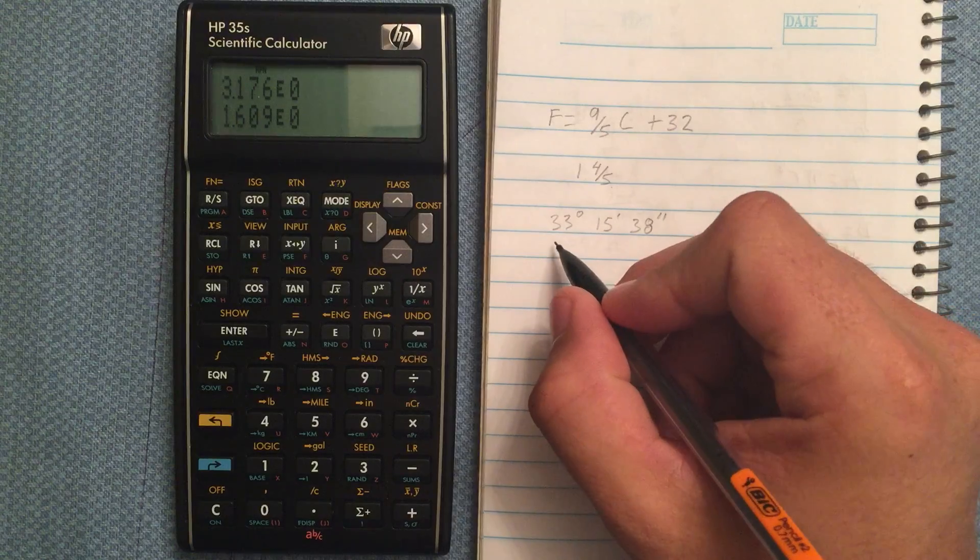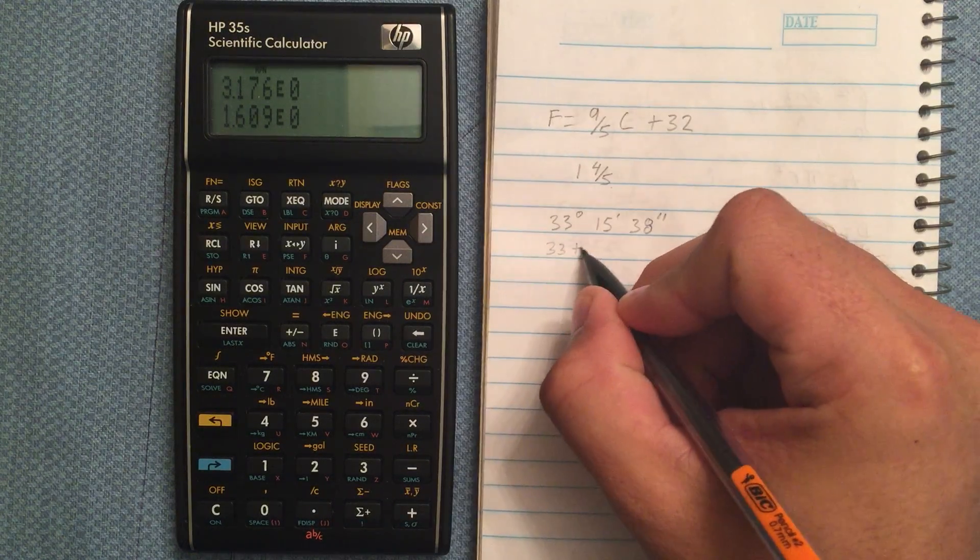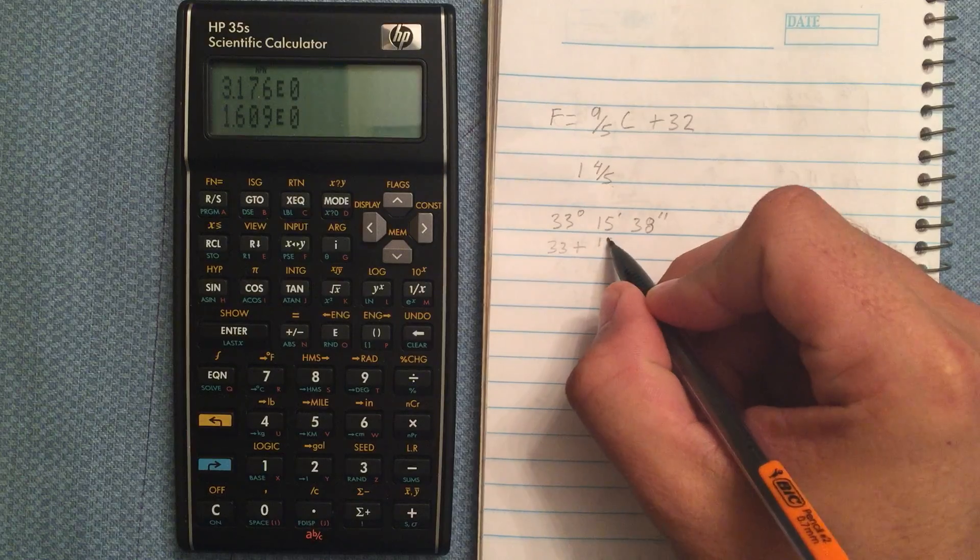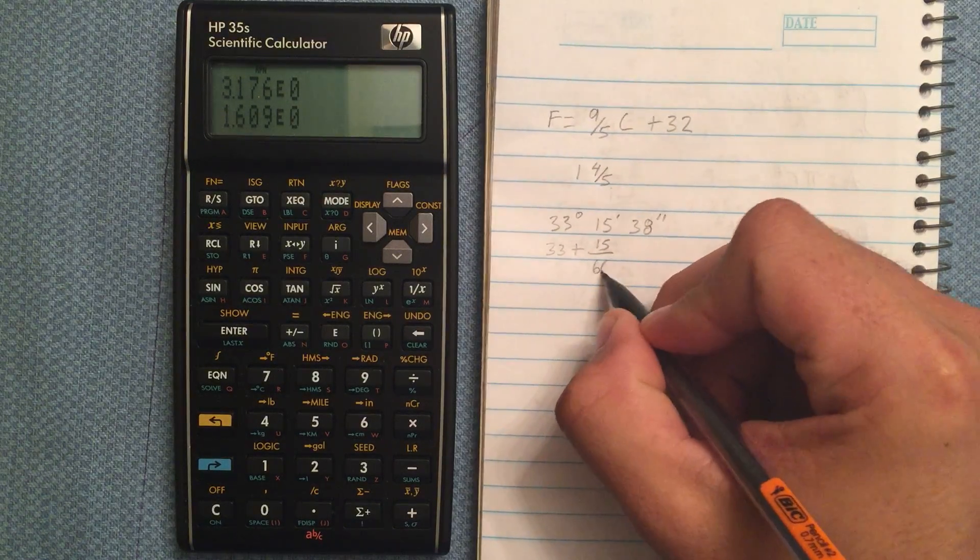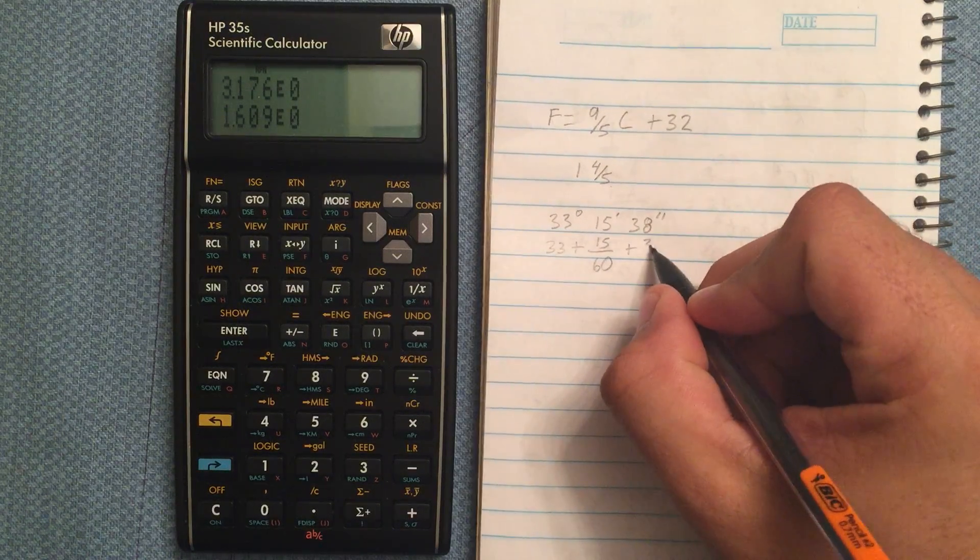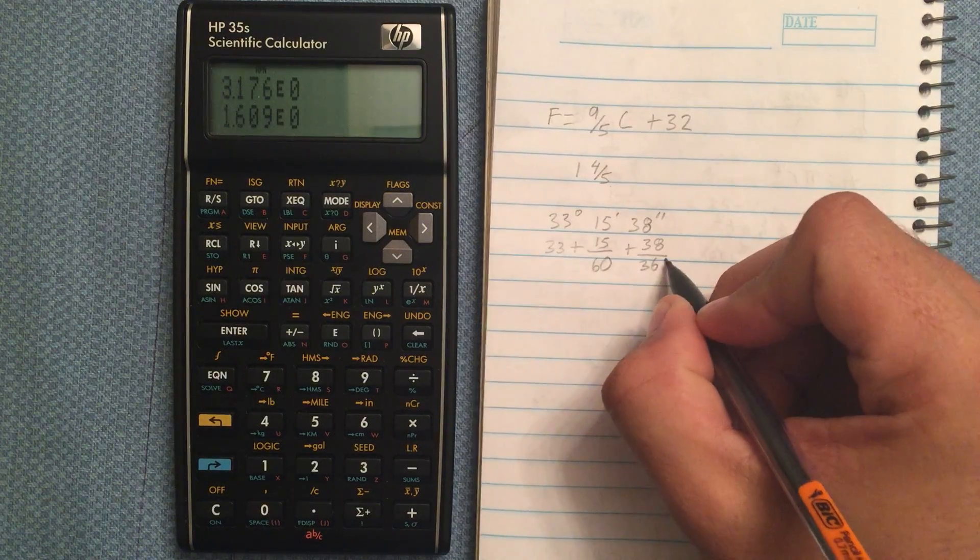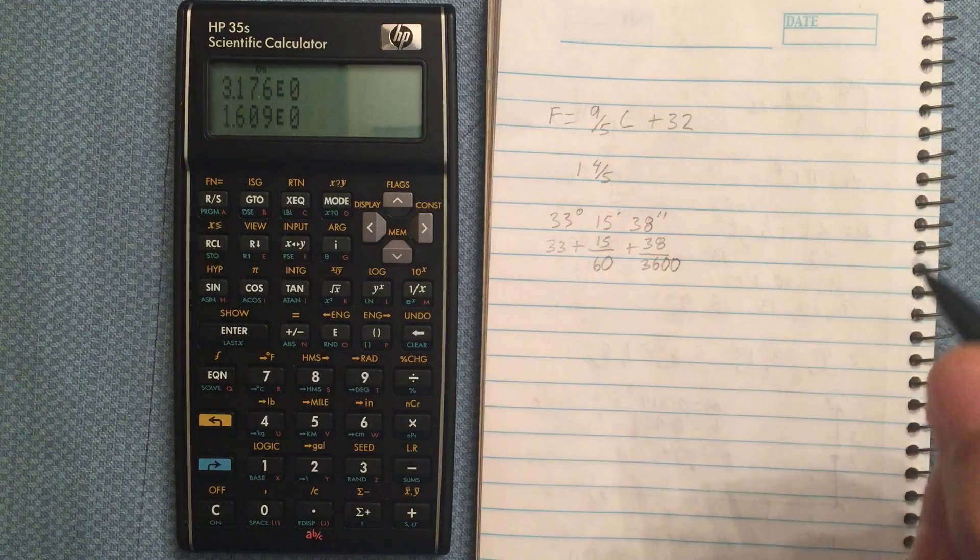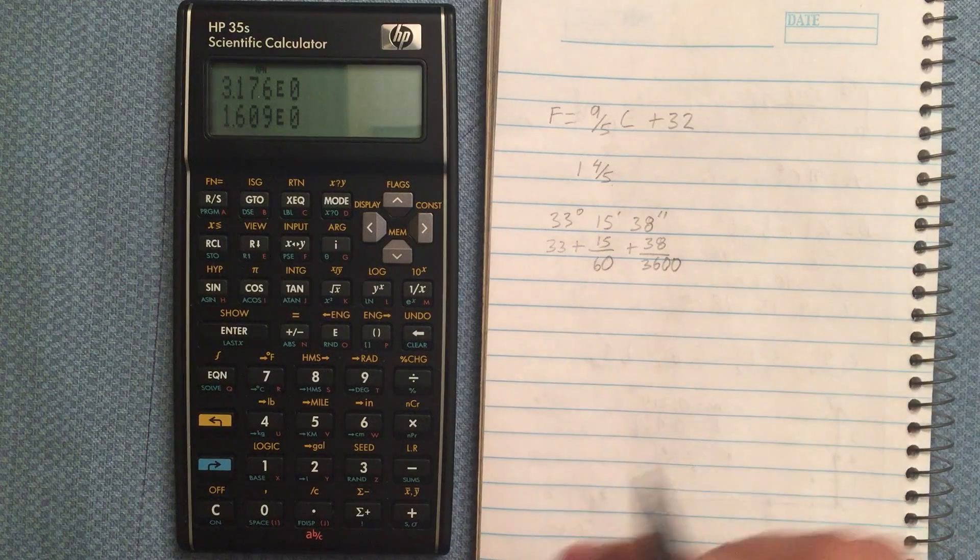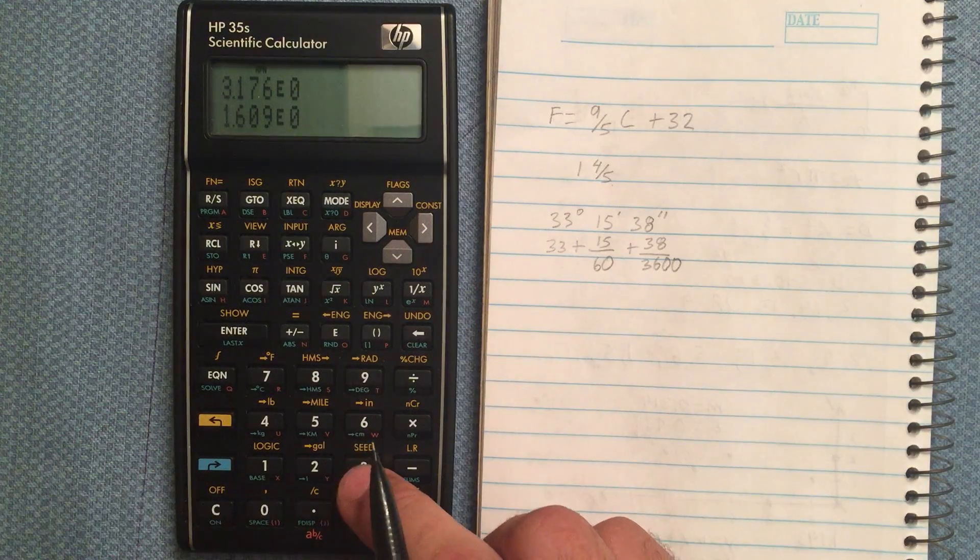You could do this by hand. We have 33 and then plus 15 divided by 60, plus 38 divided by 3600. 60 times 60. Now, let me go ahead and calculate that.